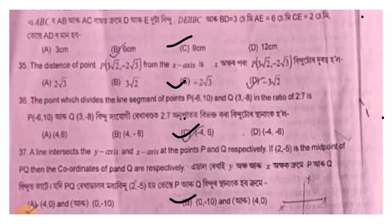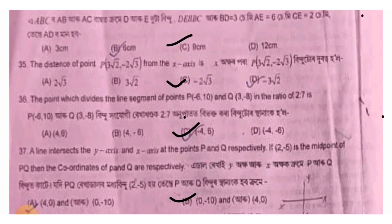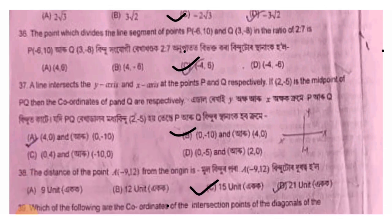The point which divides the line segment joining P(minus 6, 10) and Q(3, minus 8) in the ratio 2 is to 7. Using the section formula: x = (m1 x2 plus m2 x1) divided by (m1 plus m2), and y = (m1 y2 plus m2 y1) divided by (m1 plus m2). The answer is option C: (minus 4, 6).